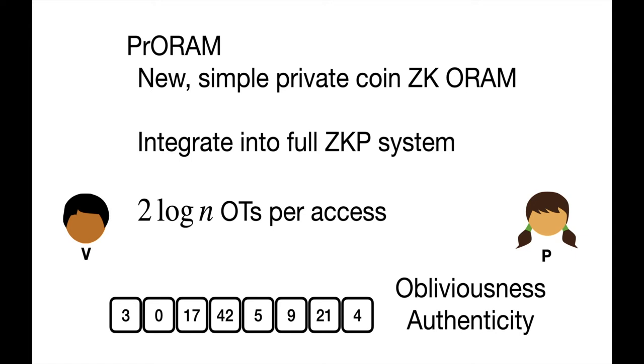In this work, we introduce ProRAM, a new zero-knowledge ORAM. ProRAM relies on only very simple primitives, namely oblivious transfers, and is efficient. In particular, each RAM access uses only two log n oblivious transfers. In the remainder of this talk, I'll dig into the details of ProRAM. At the end, we'll consider the concrete performance of the overall system.